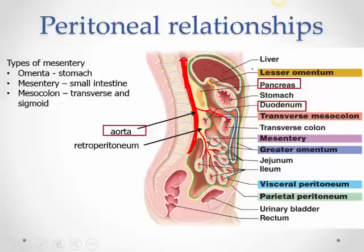The small intestine has mesentery. Retroperitoneal organs like the pancreas, duodenum, and aorta lie behind the peritoneum, without a fold to suspend them. These organs cannot move, while intraperitoneal organs with mesentery can. Organs with mesentery are called intraperitoneal.